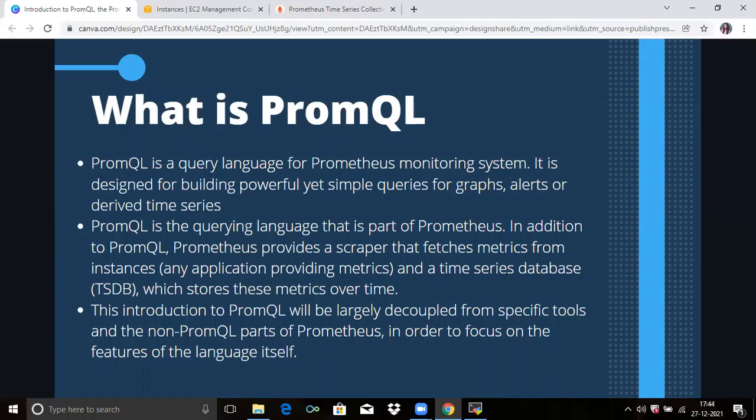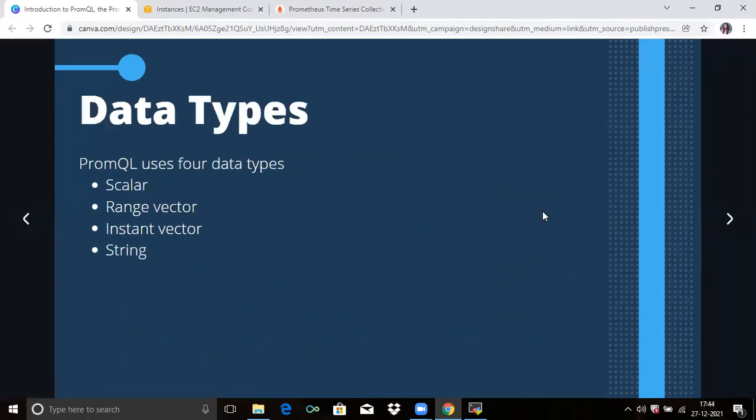In this video, first we will learn data types that PromQL expressions or sub-expressions can be. PromQL uses four data types: scalar, range vector, instant vector, and string. Let's understand one by one.